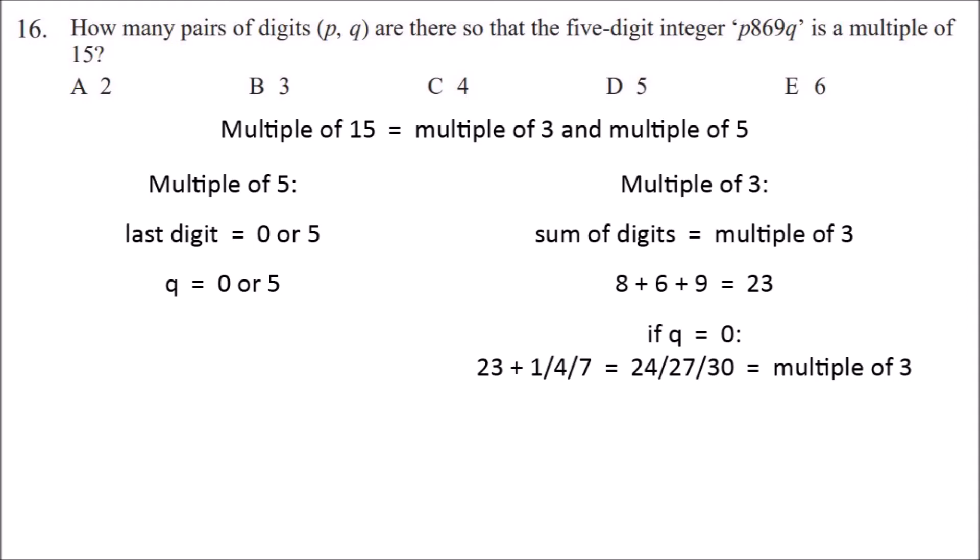If q was 0, then p could either be 1, 4, or 7 to make that a multiple of 3. Now if q was 5, then p could be 2, 5, or 8 to make it a multiple of 3.